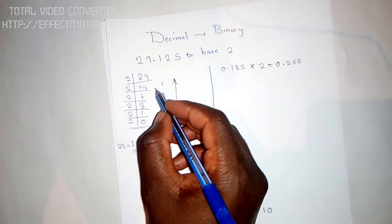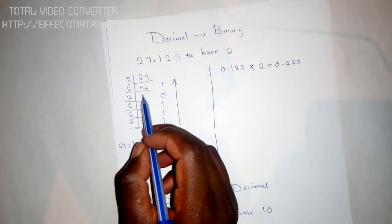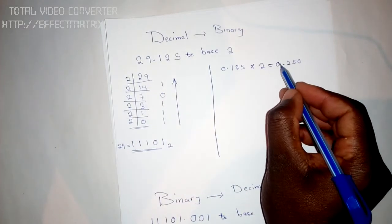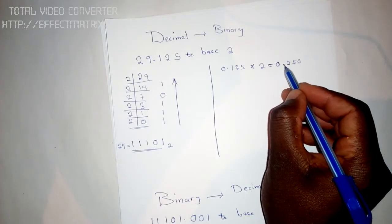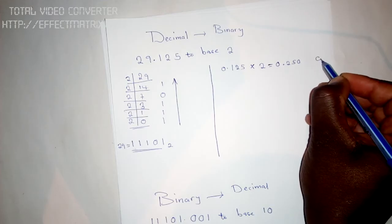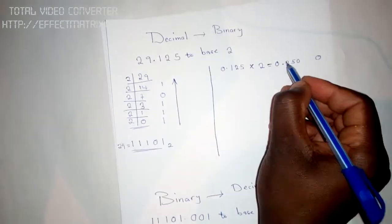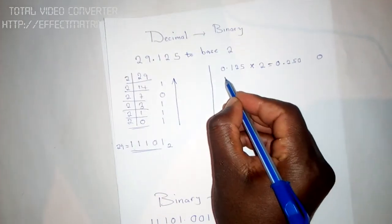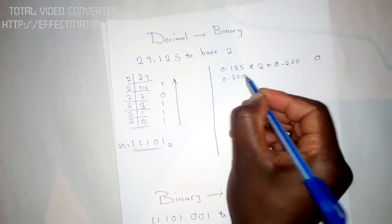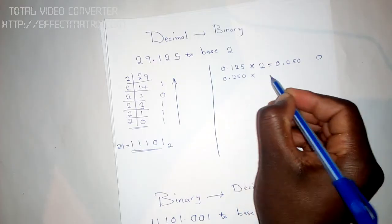Now, if you remember what was happening - we were getting the remainders, but here we'll be getting the number that is in front of the decimal point. In this case, there is 0 here. So you get 0.250, you multiply it by 2.